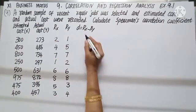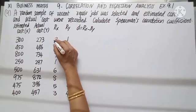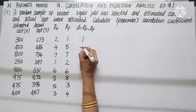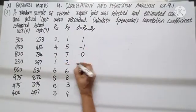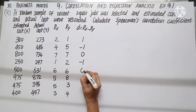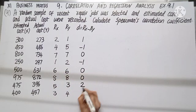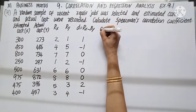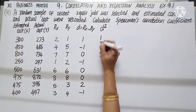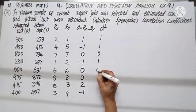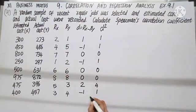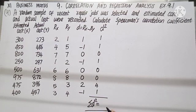Having allotted ranks for X and Y, find out D, which is Rx minus Ry: 2 minus 1, 4 minus 5, 7 minus 7, 1 minus 2, 6 minus 6, 8 minus 8, 5 minus 3, and 3 minus 4. Calculating D squared by squaring: 1, 1, 0, 1, 0, 0, 4, 1. Totaling, sigma D squared equals 8.